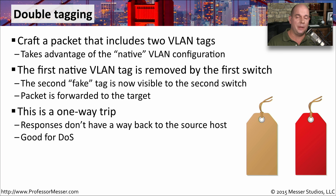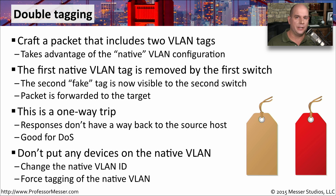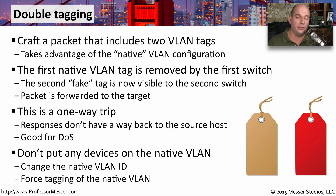One challenge with double tagging is that because spoofing is involved, there's no way for that traffic to come back to you. So this is a one-way trip, but if you're trying to perform a denial of service, this might be a useful mechanism. If you want to avoid double tagging on a switch, you should remove any device on the native VLAN, change the default VLAN ID for the native VLAN, and force tagging for any traffic on that native VLAN. By forcing the tag, you avoid the capability of double tagging as traffic traverses multiple switches.